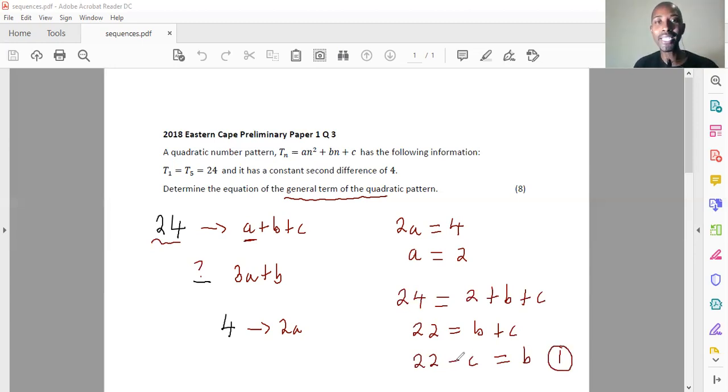So for me to find out the general term and get my eight marks of a quadratic pattern, I need to know what a is, I need to know what b is, I also need to know what c is. So far, I only know a. So how do I find my b? How do I find my c?